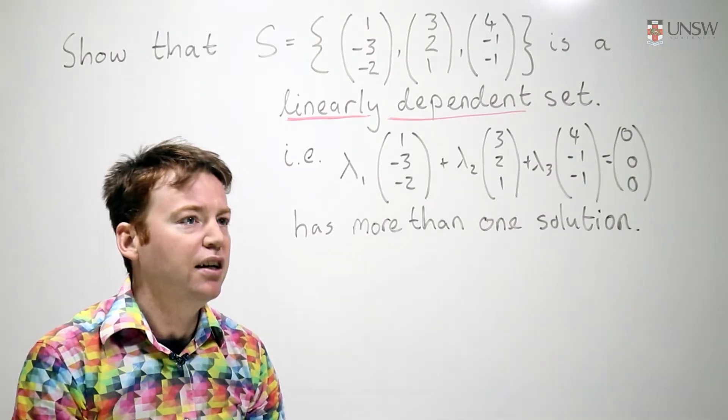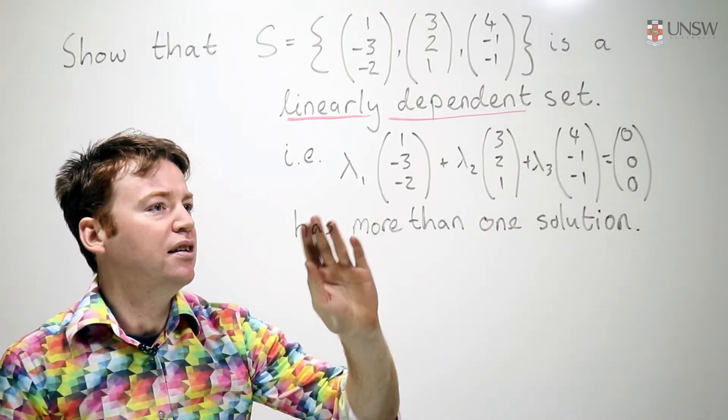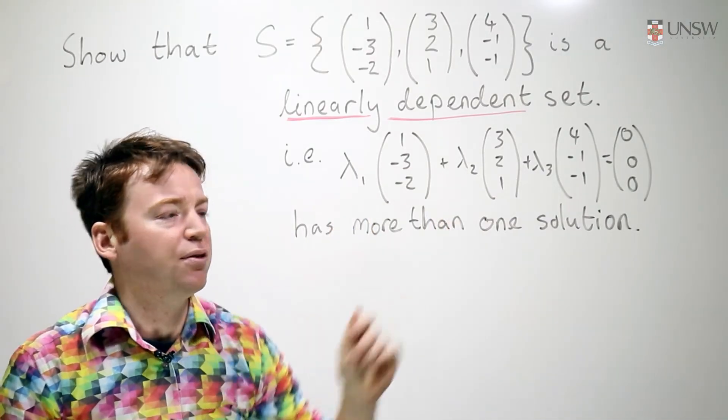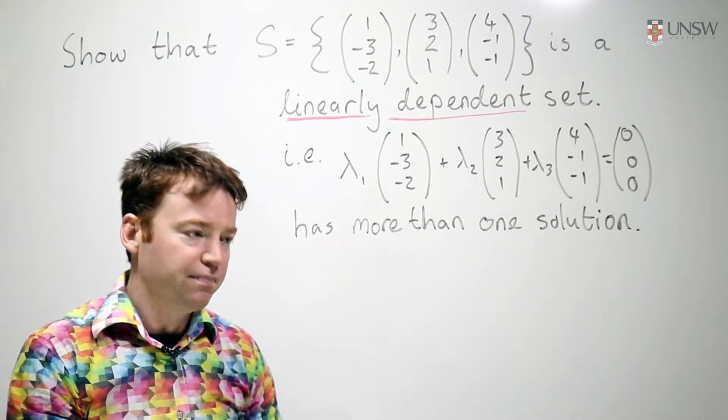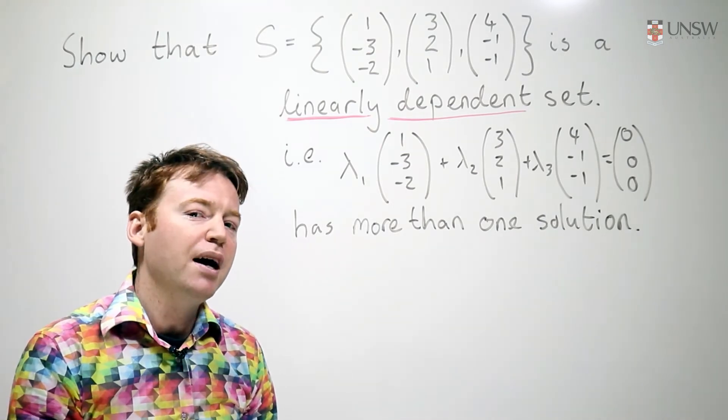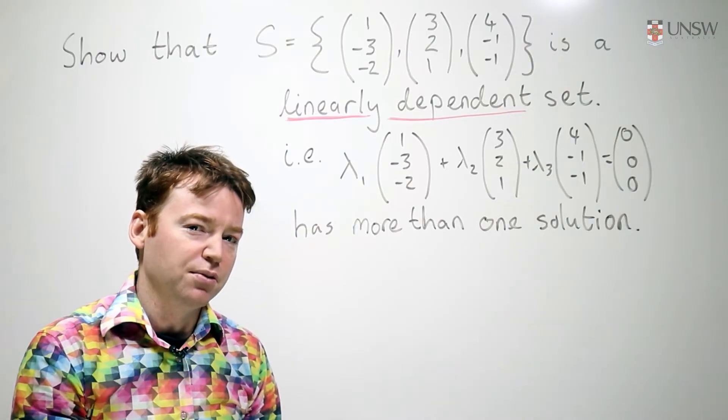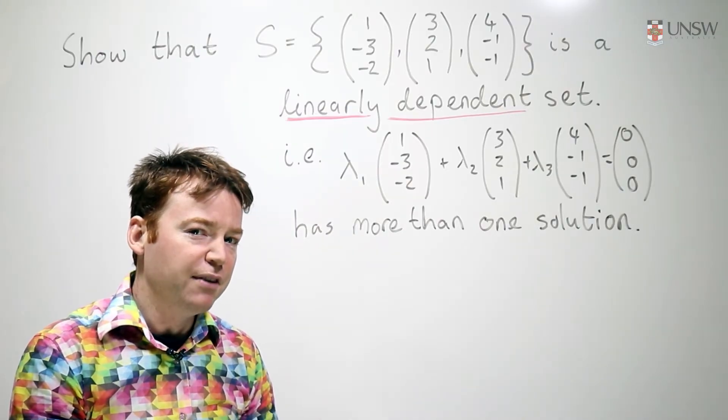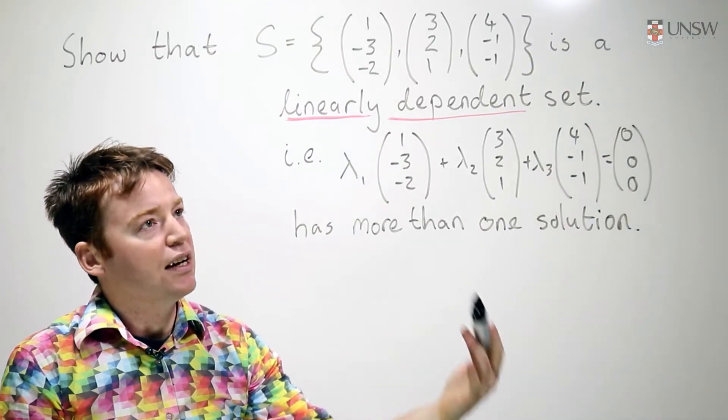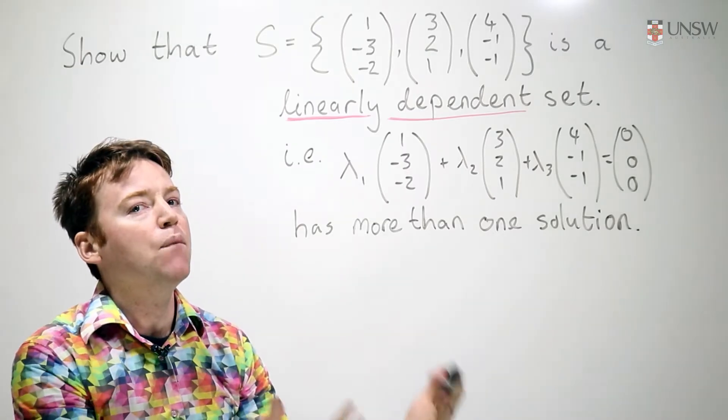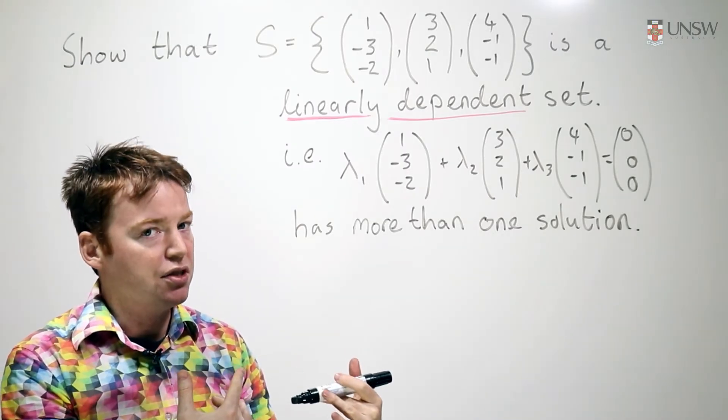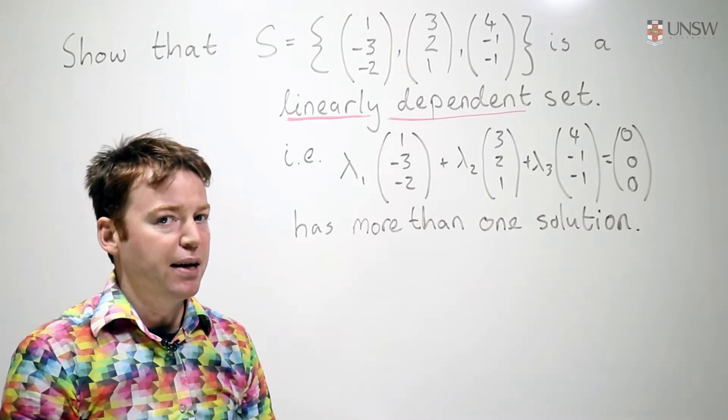Of course if you were to meet this equation in the street and someone demanded of you that you solve it, you could solve it easily. You could just say let lambda 1, lambda 2, lambda 3 all be zero. The interesting part is, is that the only solution? If it is the only solution, the vectors are independent. If there are more solutions than just the zero solution, then they're dependent.